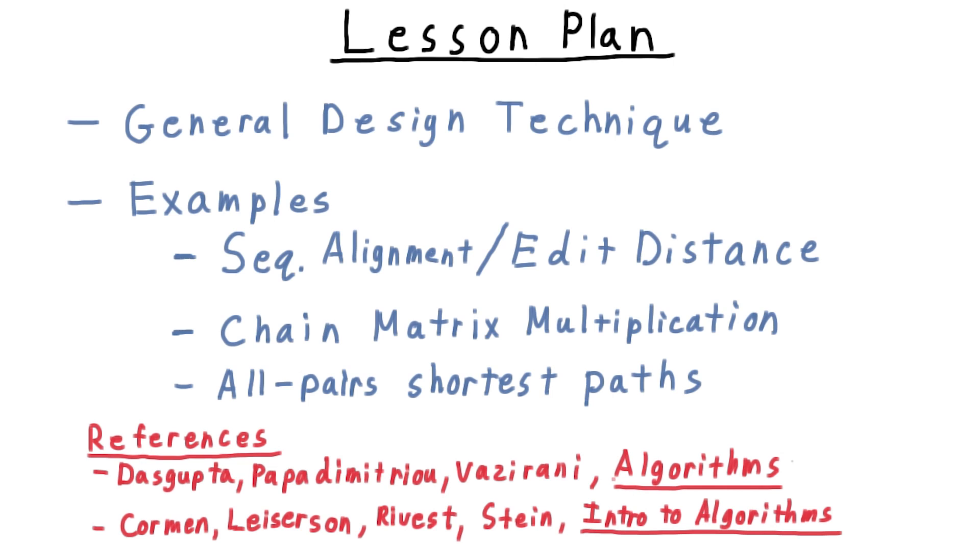Good references for these topics are Dasgupta, Papadimitriou, and Vazirani, their book on algorithms, and the classic Cormen, Leiserson, Rivest, Stein introduction to algorithms.